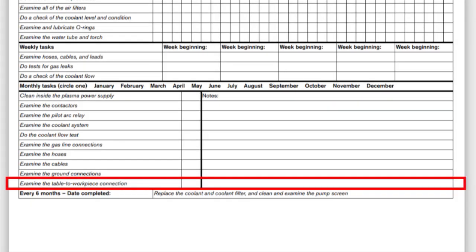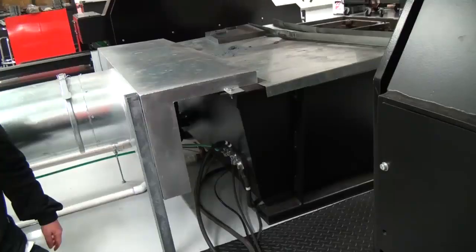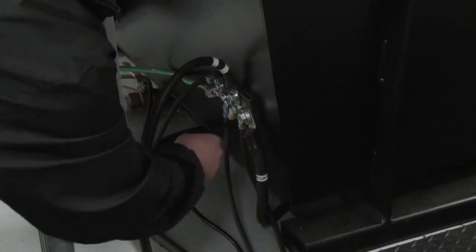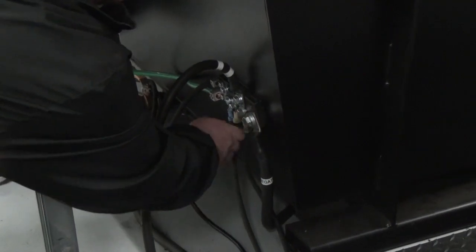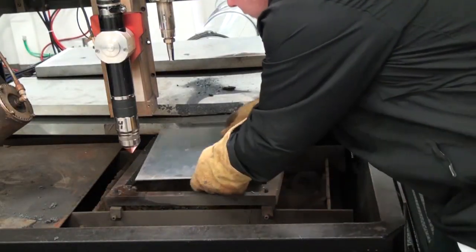Finally, examine the table to workpiece connection. Examine the work lead, positive connection, where the work lead connects to the cutting table. This is commonly an overlooked item since it may not be readily accessible. Verify there is no paint, oil, dirt, or rust on the workpiece.